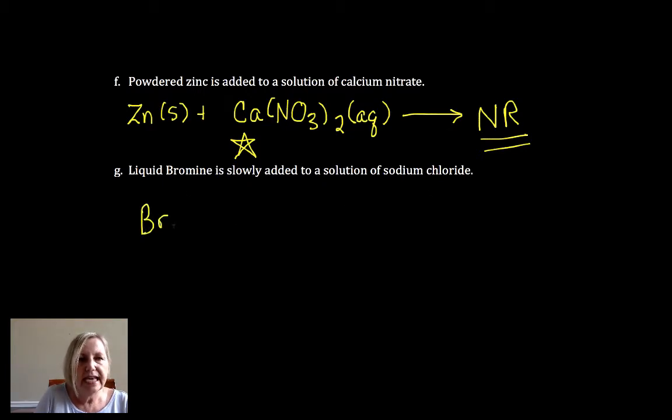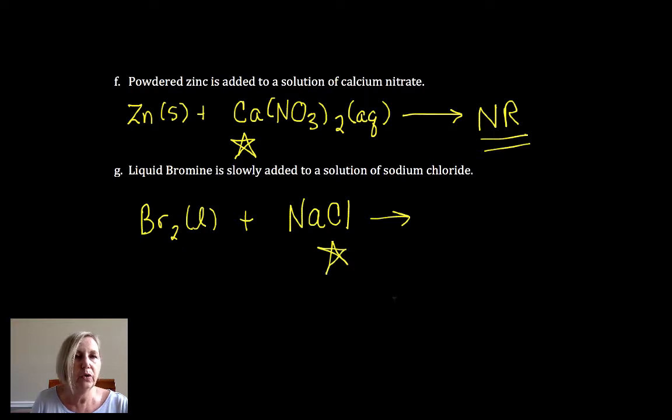Bromine is added drop by drop, slowly added to a solution of sodium chloride. Now I'm comparing bromine and chlorine. If you look at the periodic table, chlorine prefers to be the anion chloride. And it is in this case. And so there is no drive. The one that wants to be the anion, the one that has the bigger drive or draw of electrons is the anion. So that would be no reaction.